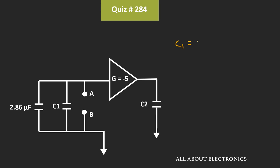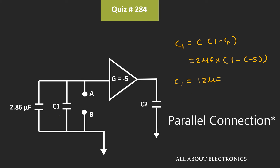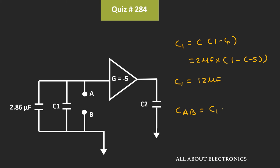This capacitance C1 is equal to C times (1 - G). The value of this capacitor C is equal to 2uF, while the gain of this amplifier is equal to minus 5. That means this term will be equal to 1 - (-5), so the value of C1 is equal to 12uF. These two capacitors are connected in parallel, so the equivalent capacitance across nodes A and B is equal to C1 plus 2.86uF, which is 12 plus 2.86uF, giving an equivalent capacitance of 14.86uF.